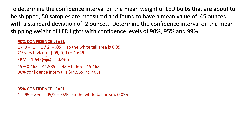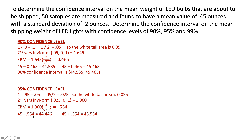For the 95% confidence level: 1 minus 0.95 is 0.05; divide by 2 to get 0.025. Put that into the inverse norm function on second VARS with 0 and 1 for z-score mode, and you get 1.960. The error bound takes that 1.960 and multiplies it by the standard deviation divided by the square root of the sample size, giving 0.554. Then do 45 minus 0.554 and 45 plus 0.554 — that gives the interval, with 45 as the middle. The 95% confidence interval is (44.446, 45.554). It makes sense that it would be a slightly wider interval than the 90% interval.